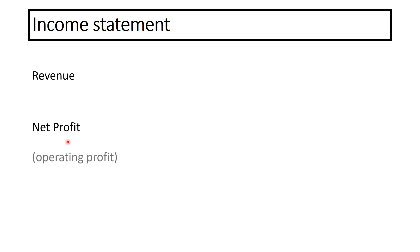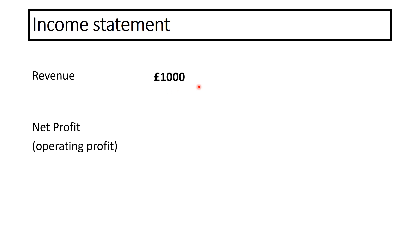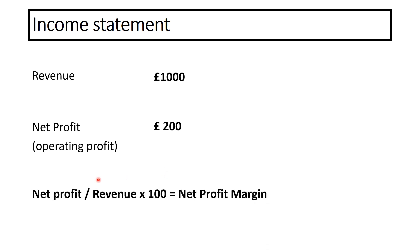Be careful, because you'll frequently see net profit referred to as operating profit — they mean the same thing and you can use the figures. For our example, we're going to look at a business which has a revenue of £1,000. After they've paid all their costs, what they are left with is a net profit of £200. To calculate net profit margin, we take the net profit figure, divide it by the revenue, and times it by 100.